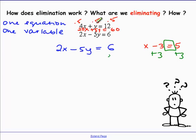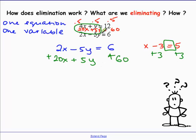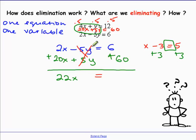Now I'm going to take the left side of my equation and add it to the left side of the second equation, and the right side — which is 60 — to the right side. Two equal things can be added to both sides. So now I get 22x, and 0y — the y variable gets completely eliminated — equal to 66. Dividing both sides by 22 gives x = 3.